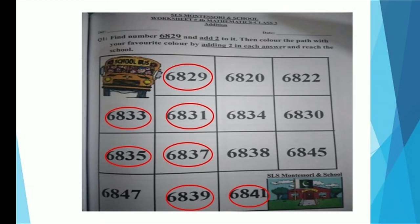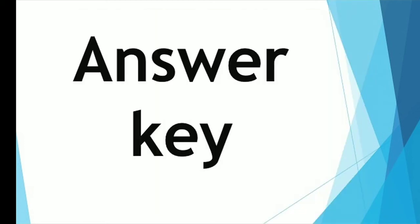Let's add 2 and tell me what will be the number — exactly, it is 6841. You have done a great job! You have found the path to school. Now you are going to color this path with your favorite color pencil. I am going to share an answer key of today's work so you can check whether you have done your work correctly or not. All the best, children!